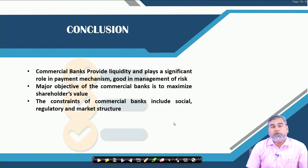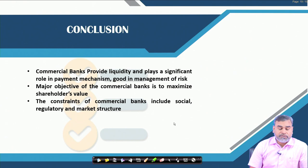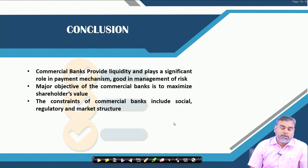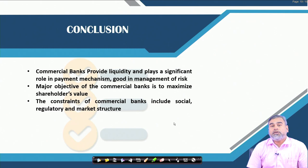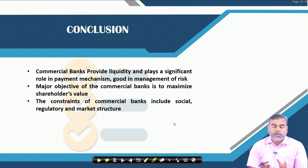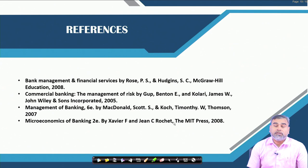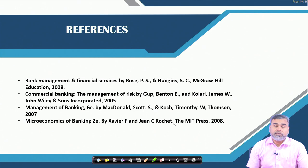In summary, commercial banks provide liquidity and play a significant role in the payment mechanism and are good at risk management. The major objective of commercial banks is to maximize shareholders' value while managing liquidity and profitability. The constraints they face include social, regulatory, and market structure constraints — whether it is a monopolistic, monopoly, or perfectly competitive market. Because of these constraints, banks may sometimes not achieve their actual goals, and this is what our discussion today has covered.